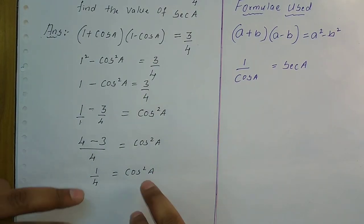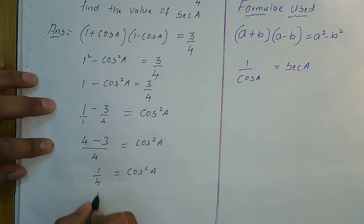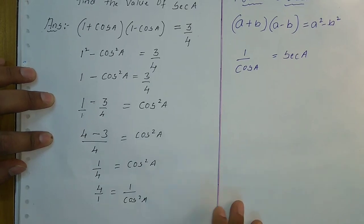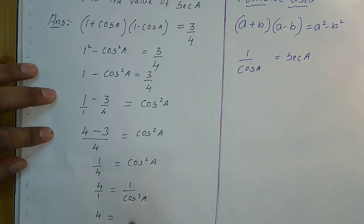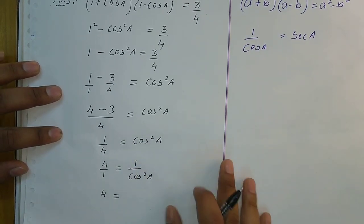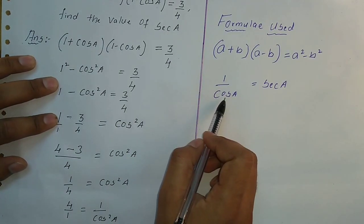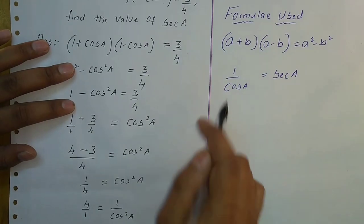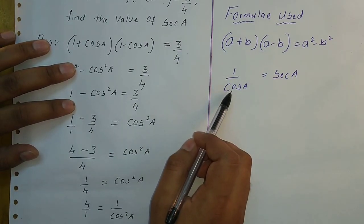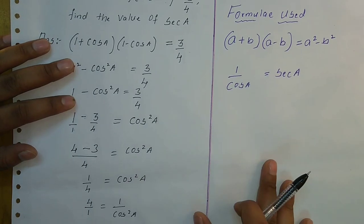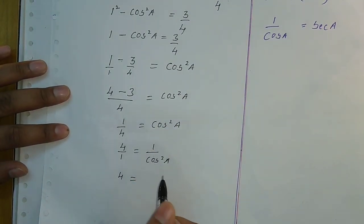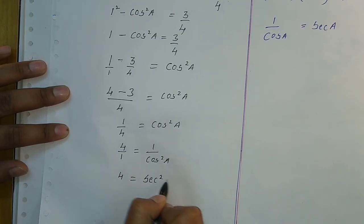Now LHS and RHS are reciprocals of each other. So 1/4 becomes 4/1 and cos²a becomes 1/cos²a. We know that 1/cos a = sec a and 1/cos²a = sec²a. So this gives us sec²a = 4.